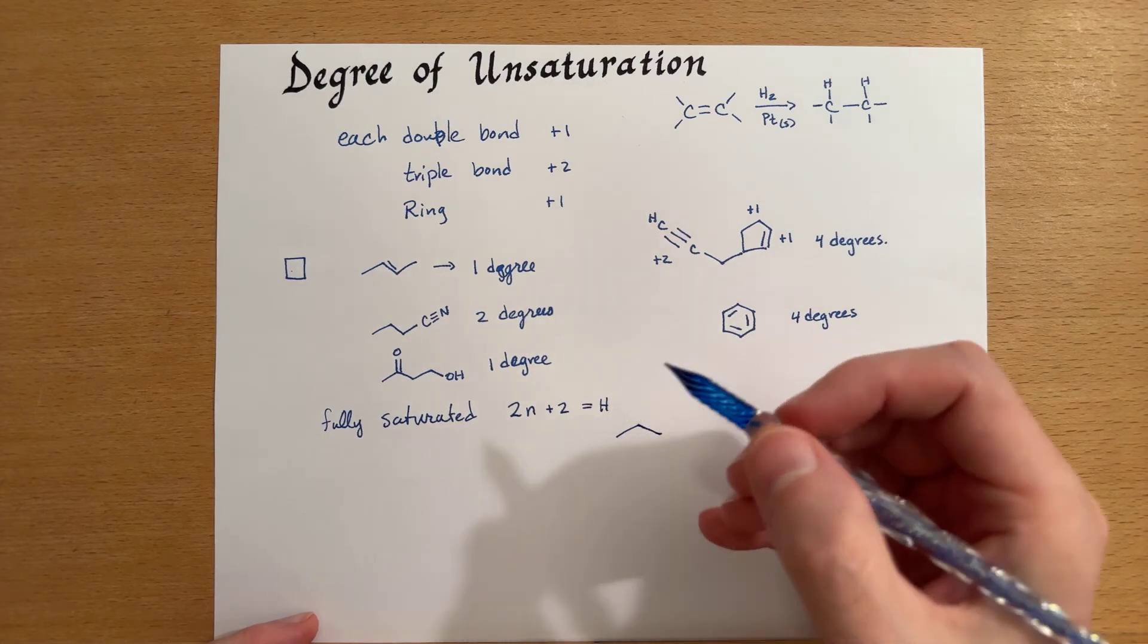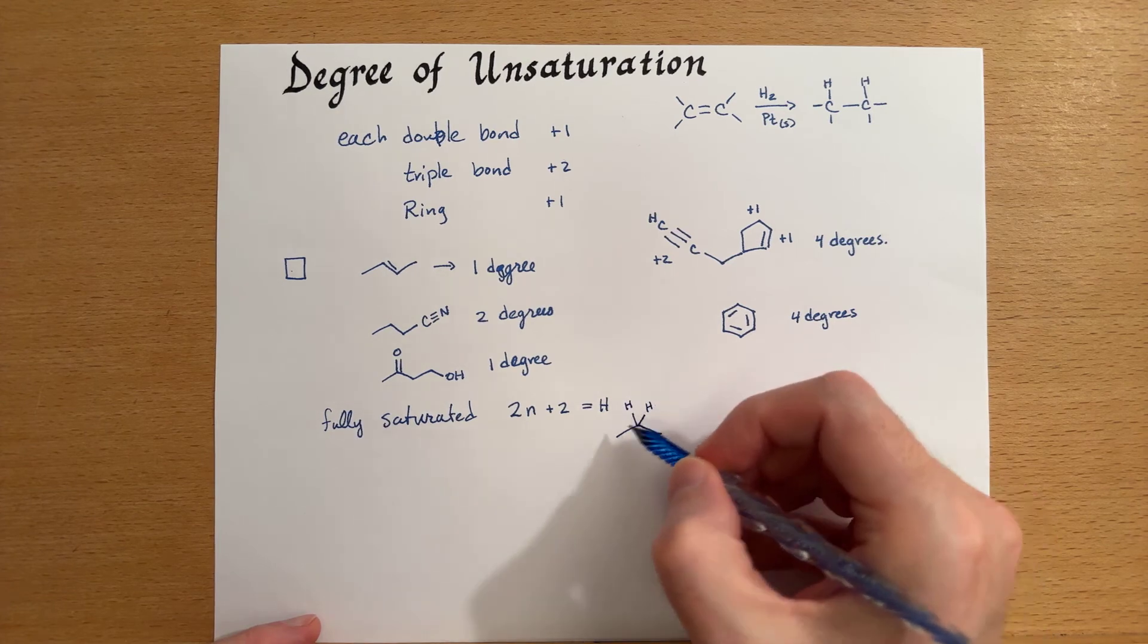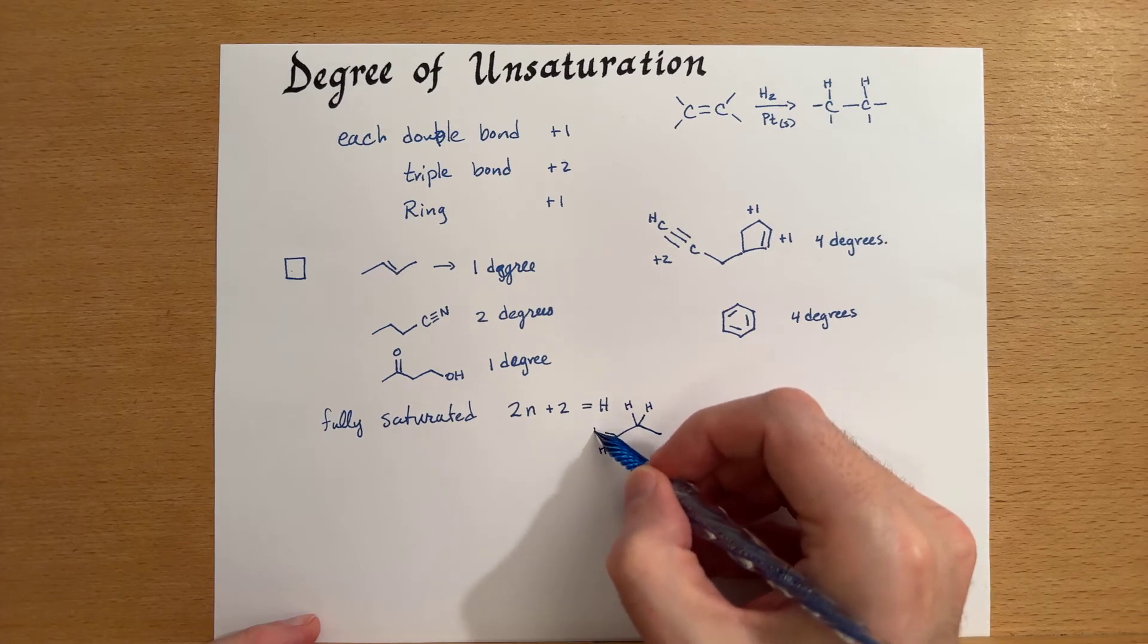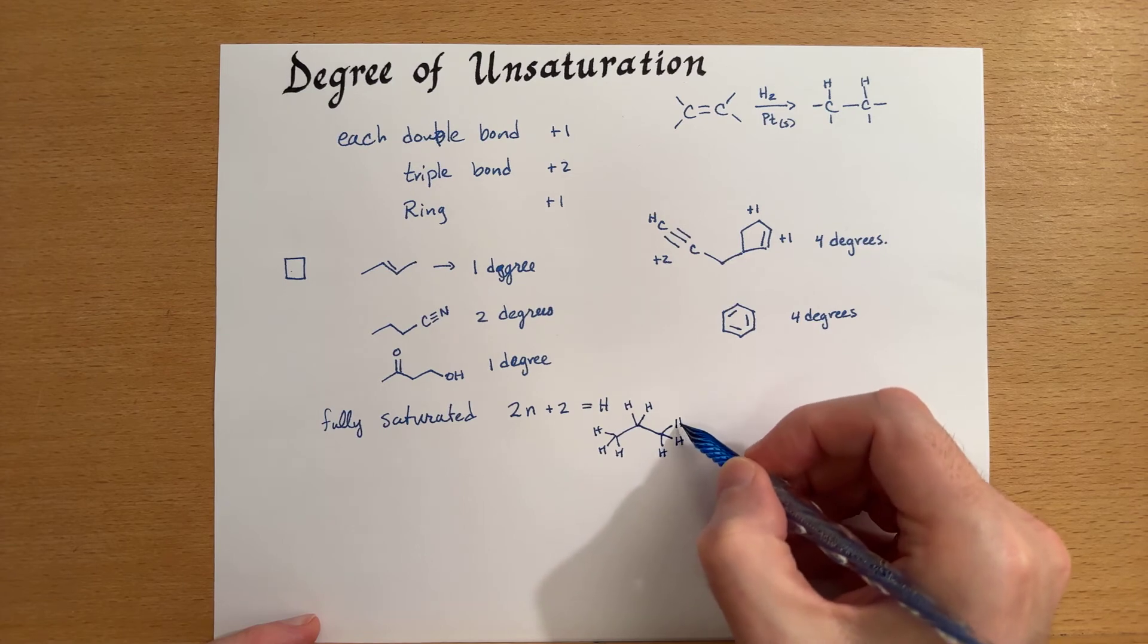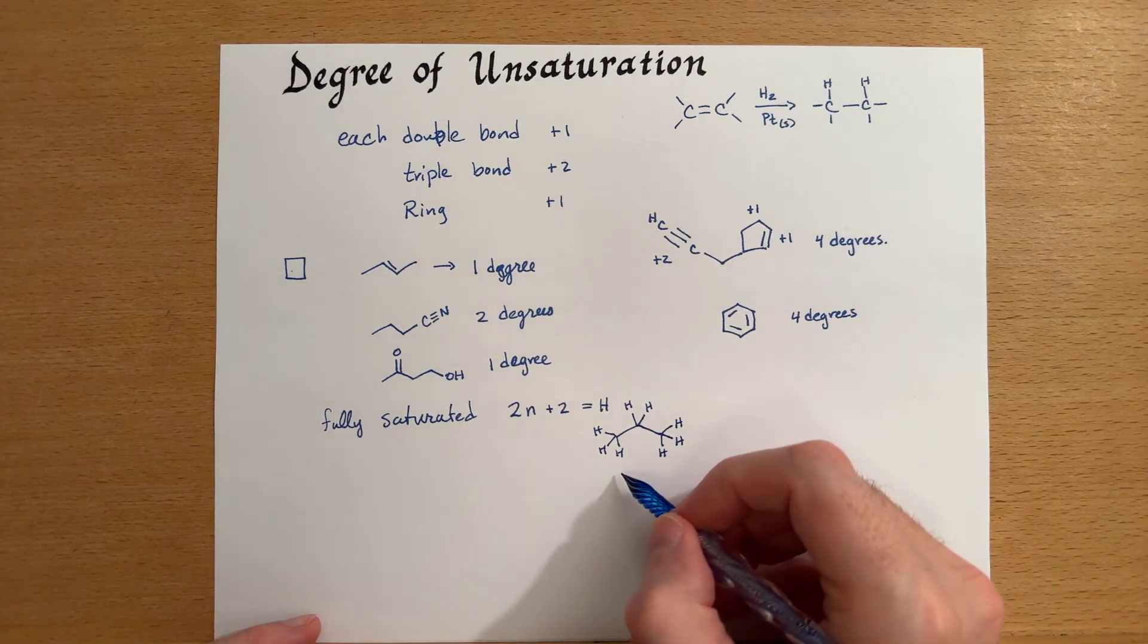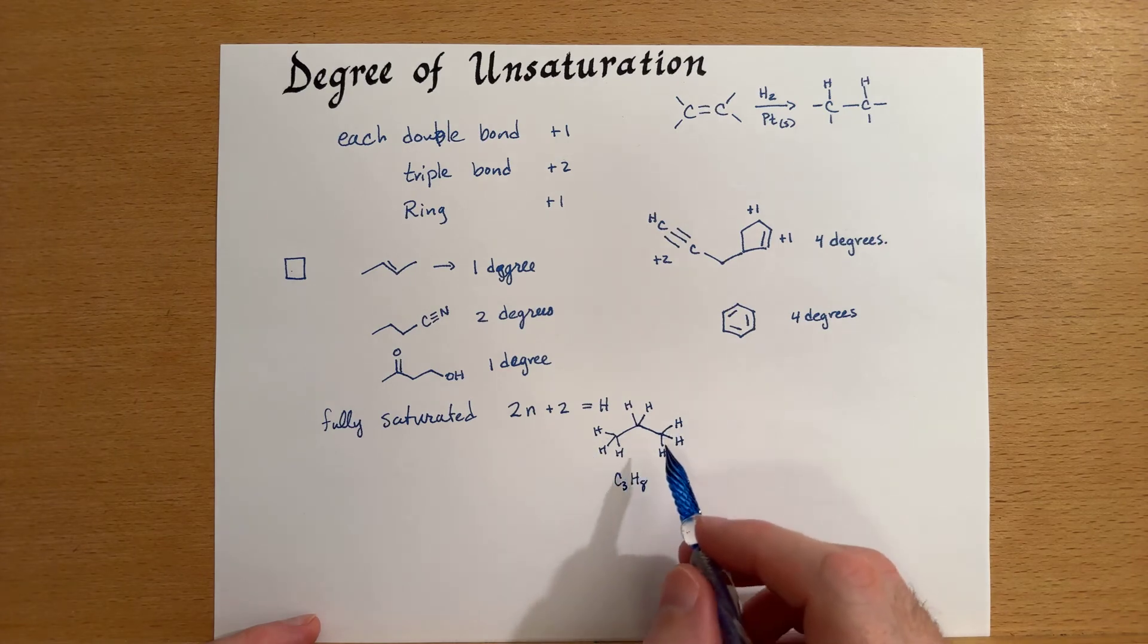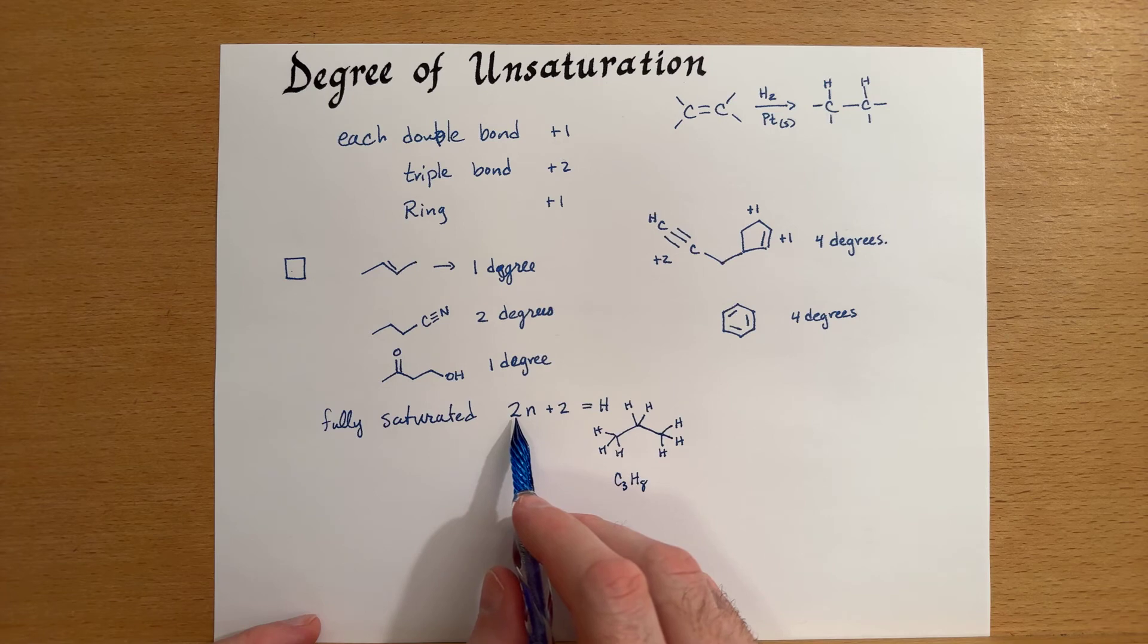So as an example, let's look at propane. And the structural formula for this is C3H8. You can see there's eight hydrogens. Three times two, that's six, plus an additional two, that's eight.